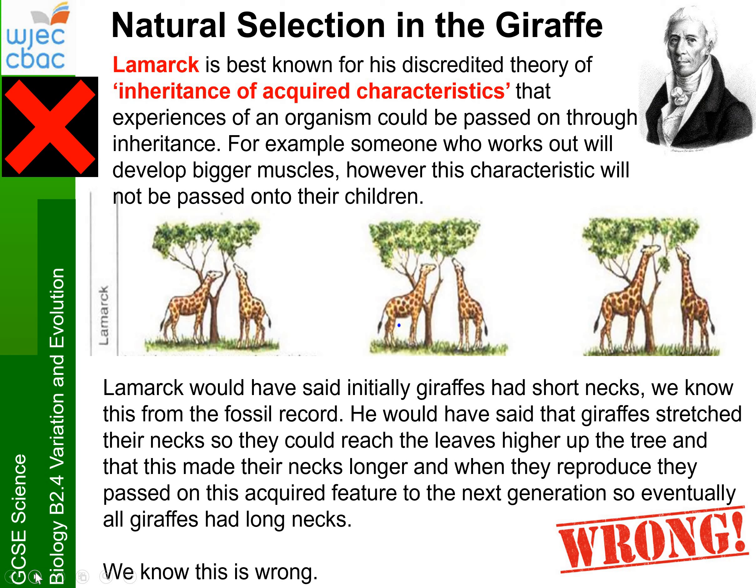The second theory we're going to look at is the theory of inheritance of acquired characteristics, and this theory was made by Lamarck. As we can see in the top right-hand corner, and you've got him on page 28, his theory was discredited — in other words, his theory was wrong. We're going to go through why he came up with his theory of inheritance of acquired characteristics, and then why it is wrong, and why Darwin's theory is the one that we traditionally believe in today.